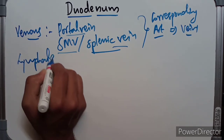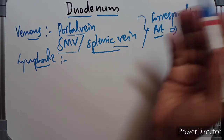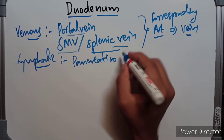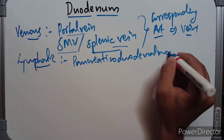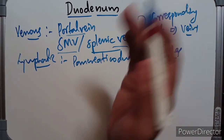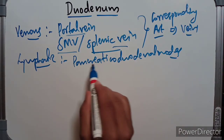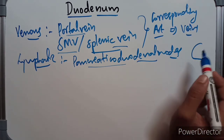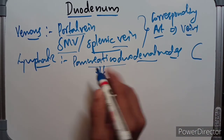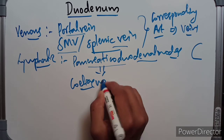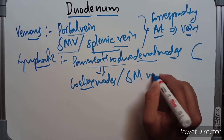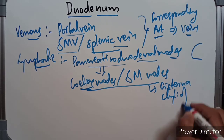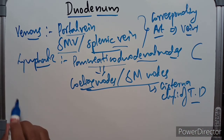Coming to the lymphatic drainage of the duodenum: the lymphatics follow the arteries, and most of them drain into the pancreaticoduodenal nodes, which lie along the inner curve of the duodenum at the junction with the pancreas. From here, the afferents drain into the celiac lymph nodes and the superior mesenteric nodes. These finally drain into the cisterna chyli of the thoracic duct.